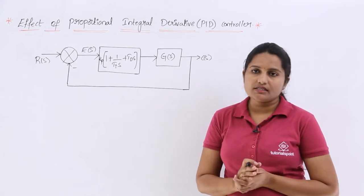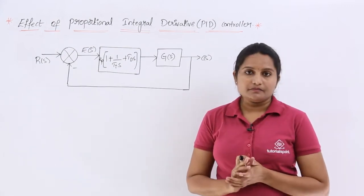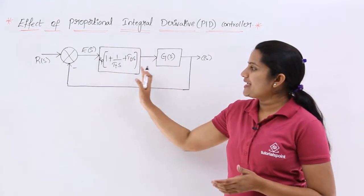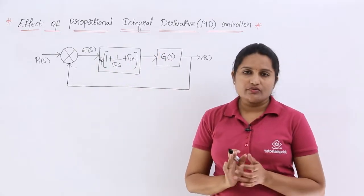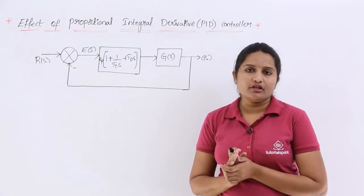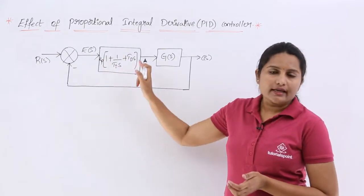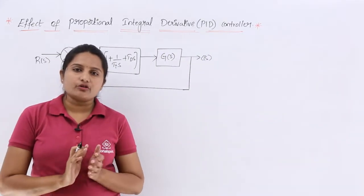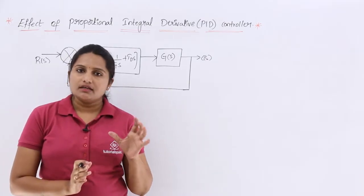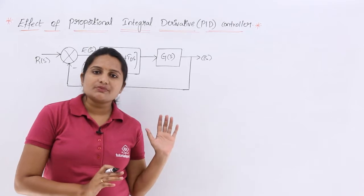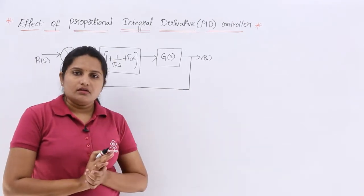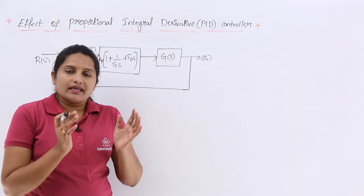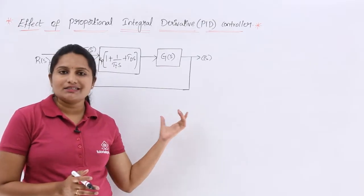In the previous video, we discussed how to design this block diagram for a PID controller — that is, a control system with a PID controller. We completed the analysis to calculate the transfer function. This is the block diagram of a closed-loop control system with a PID controller integrated in it, and we are going to see how the closed-loop transfer function varies because of this PID controller.